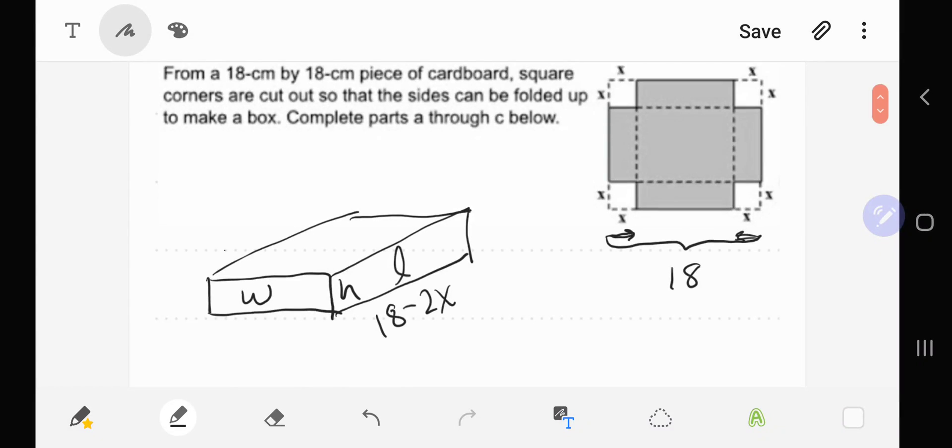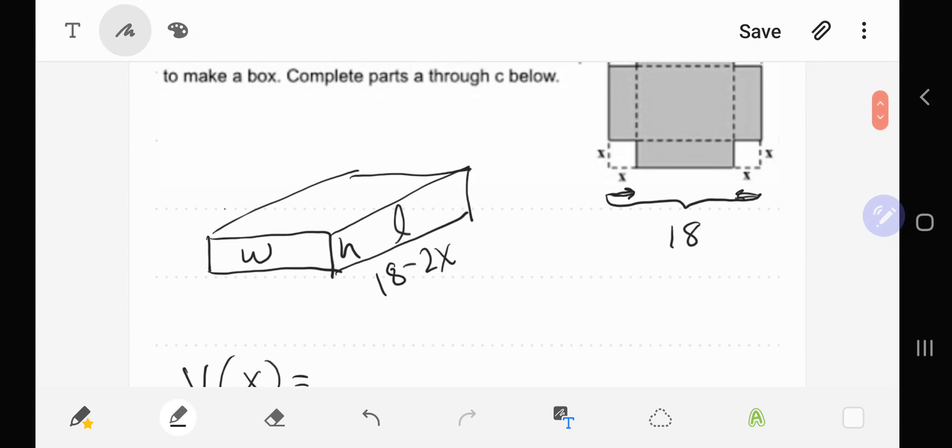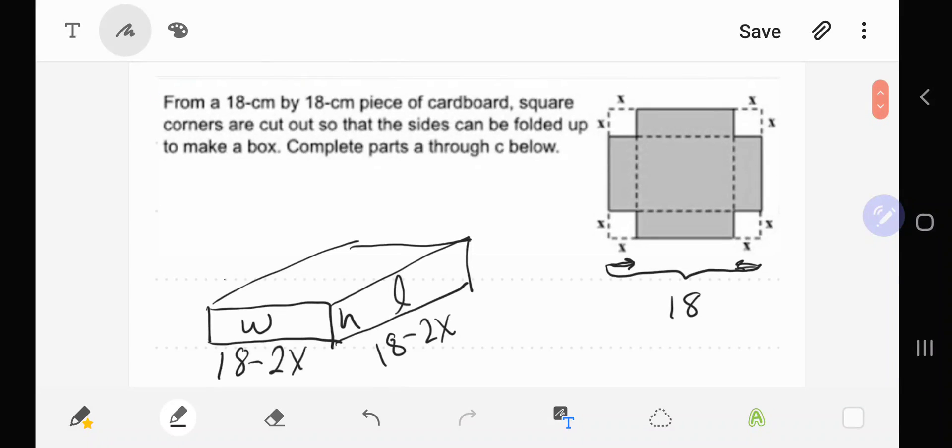The width is going to be the same. Since this is a square piece of cardboard, the width is going to be 18 minus 2x. And notice when I fold this flap up, the height of the box is going to be this length of the flap, which is how much we're going to cut off, which is x.